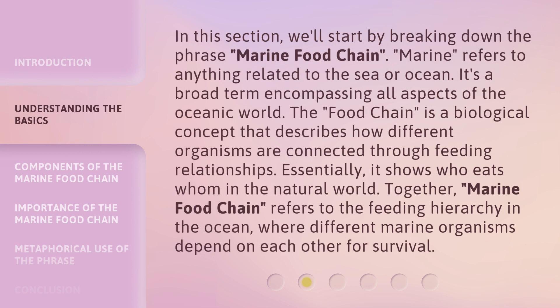In this section, we'll start by breaking down the phrase 'marine food chain.' Marine refers to anything related to the sea or ocean — it's a broad term encompassing all aspects of the oceanic world. The food chain is a biological concept that describes how different organisms are connected through feeding relationships; essentially, it shows who eats whom in the natural world. Together, 'marine food chain' refers to the feeding hierarchy in the ocean, where different marine organisms depend on each other for survival.